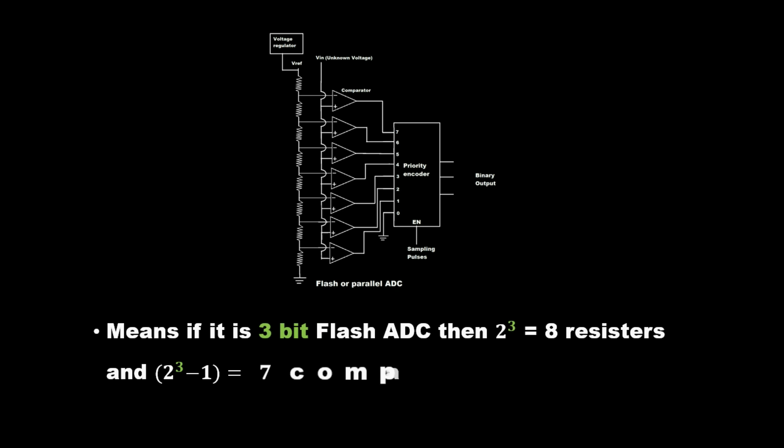This means if it is a 3-bit Flash ADC, then 2^3 = 8 resistors and 2^3 - 1 = 7 comparators are required.